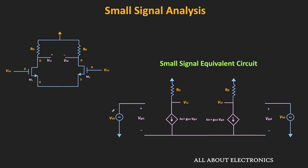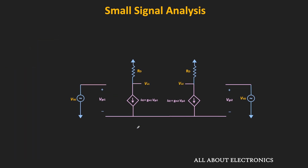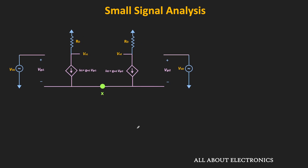After the replacement, the small signal equivalent circuit shows that the differential input is applied between the gate and the ground terminal, while the drain resistor Rd appears between the drain and the ground terminal. The currents id1 and id2 are the small signal currents — in other words, they are the change in the drain currents due to the differential inputs. The change in drain current id1 is given as gm1 times vgs1, and similarly id2 is given as gm2 times vgs2, where vgs1 and vgs2 are the changes in gate-to-source voltage due to the differential inputs.